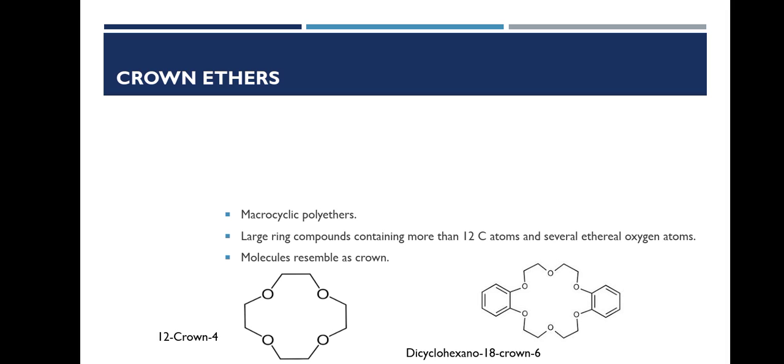Crown ethers are macrocyclic polyethers, large ring compounds containing more than 12 carbon atoms and several ethereal oxygen atoms. These molecules resemble a crown, so they are called crown ethers.